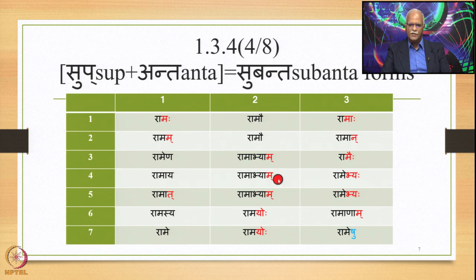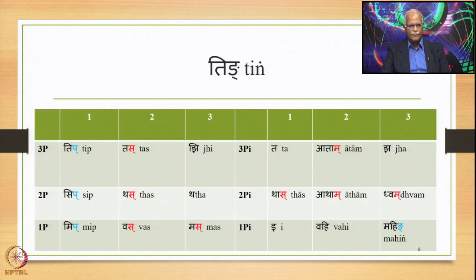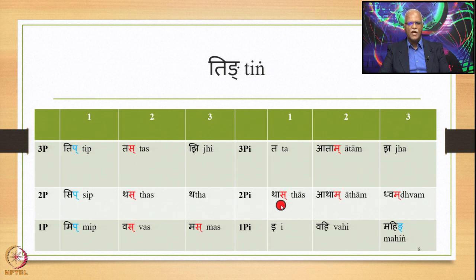The consonant Ma occurring at the end of these Padas undergoes the general Hal-Sandhi operation: if followed by a Hal, Ma is substituted by Anuswara by the sutra Mo'nuswara. This is not treated in the section of Swadhi-Sandhi. In Ting also, there are suffixes ending in Sa — Tas, Tas, Vas, Mas, Thas — so Swadhi-Sandhi applies in their case too.